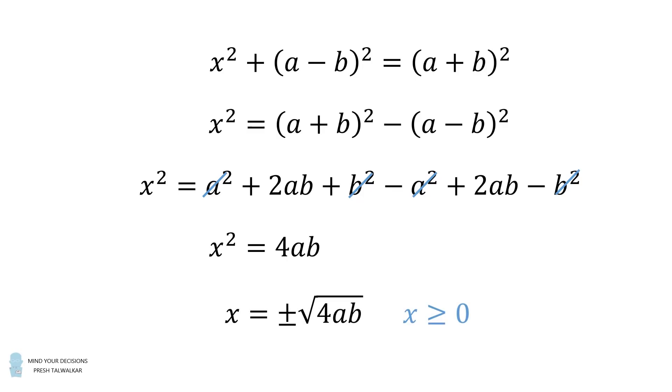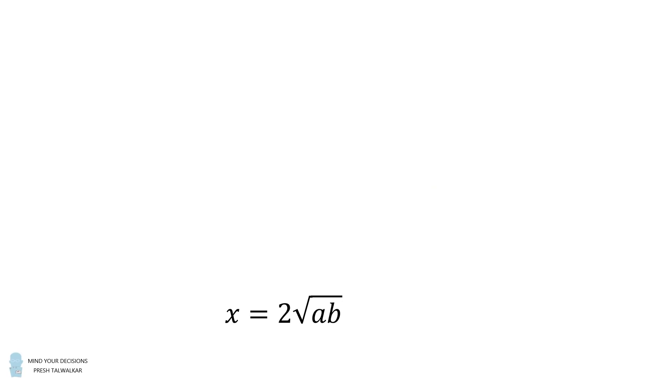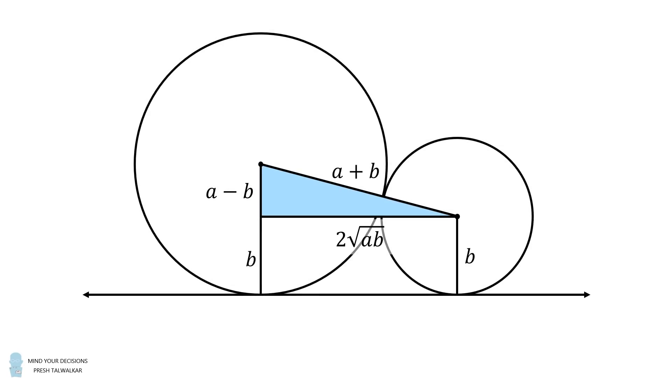Now, we want x to be a non-negative value because it's a length, so we just take the non-negative square root. Then the square root of 4ab is equal to 2 times the square root of ab. So that is the length of this leg. We go back to our original diagram, and that's exactly the length of the common external tangent.